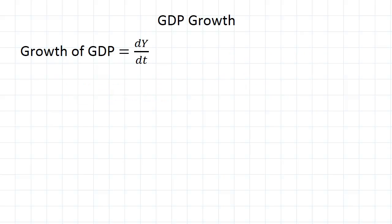If we assume the GDP is a variable that changes over time, then the growth in GDP is given by the derivative with respect to time, fairly straightforward.